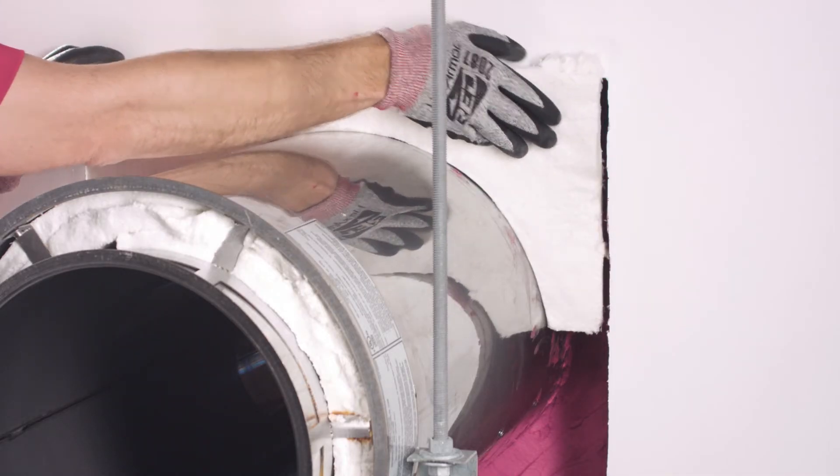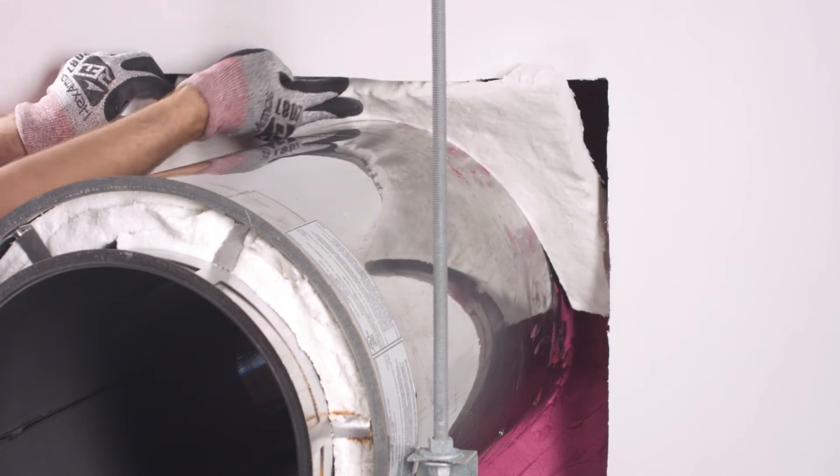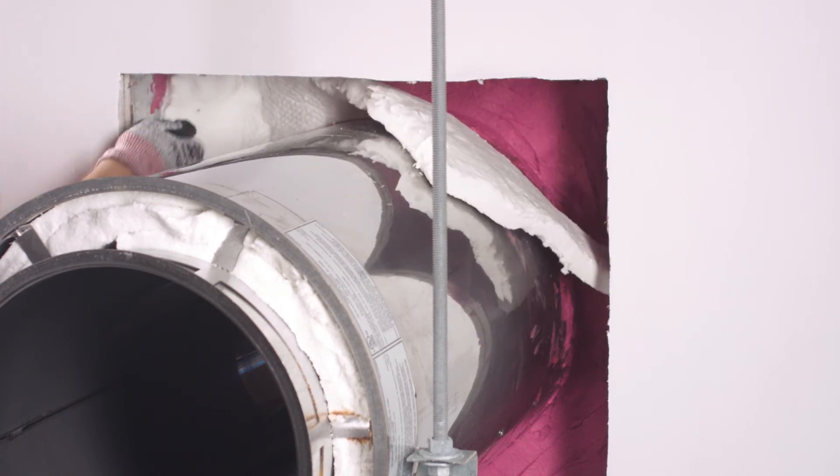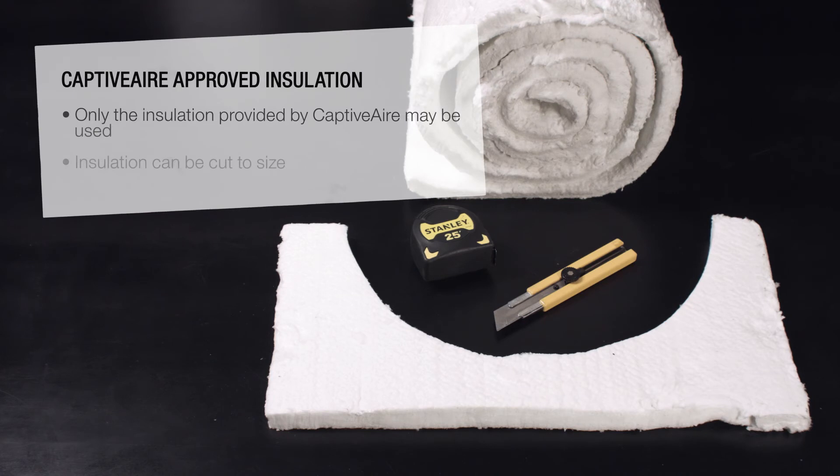From the front side of the wall, completely fill the opening by wrapping insulation to surround the duct. Insulation will come in a roll and should be field cut to size as shown. Compress the insulation, leaving three quarters of an inch between the edge of the insulation and the front of the opening in the wall.